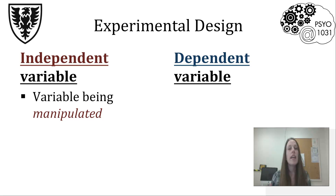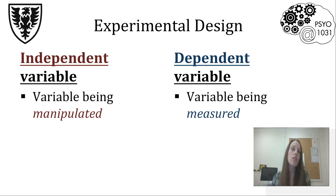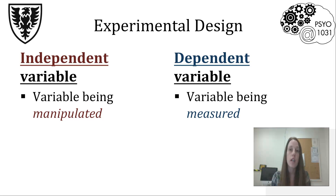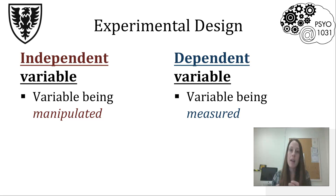The dependent variable is what you're actually measuring. Using that energy drink example, I wanted to see if it caused an increase in alertness. Alertness would be what I'm measuring — I'm looking to see if anything has changed there. I might measure heart rate, how well they do on a test, or I might just ask them how alert they feel. But whatever it is that I'm measuring is the dependent variable.